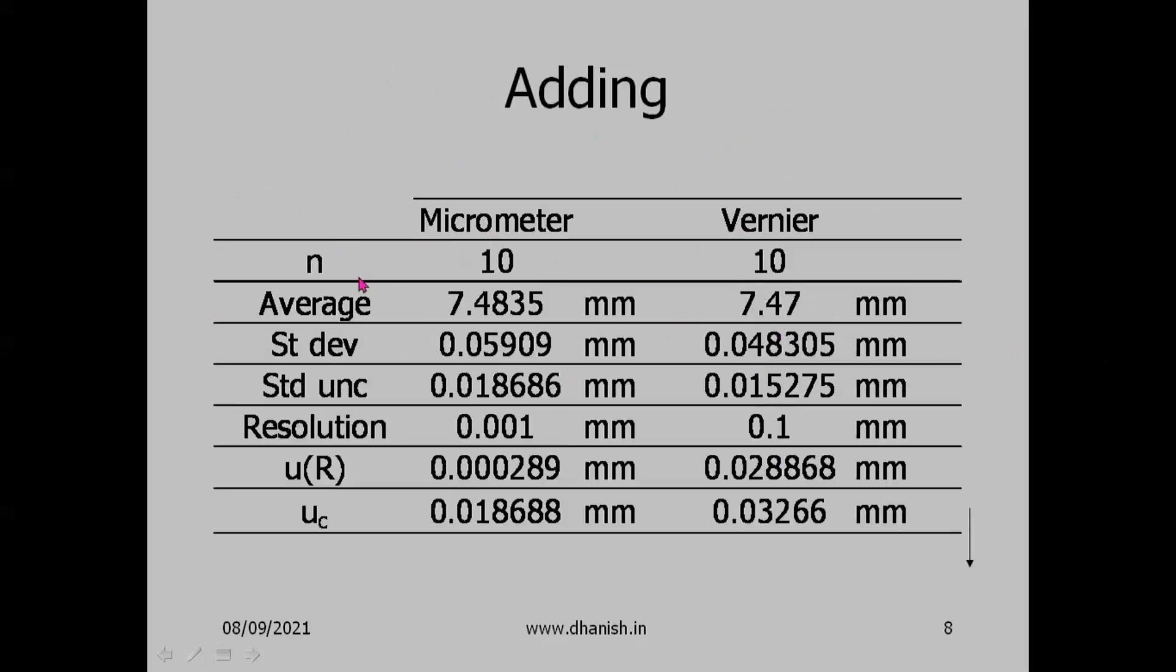Once again you compare micrometer versus vernier. Average, standard deviation, standard uncertainty are all the same. Now we add uncertainty due to resolution. The resolution for micrometer is 0.001mm, for vernier is 0.1mm. Standard uncertainty due to resolution is resolution divided by root 3. This is 0.0005 by 1.732 = 0.000289mm for micrometer. And 0.1 is ±0.05, 0.05 by root 3 is 0.028868mm for vernier.